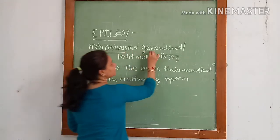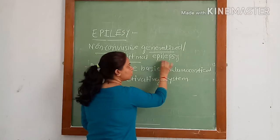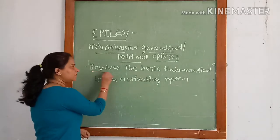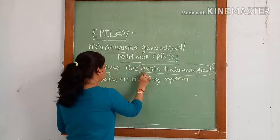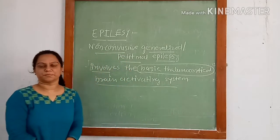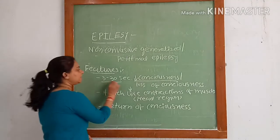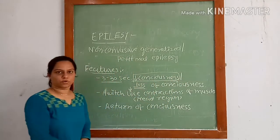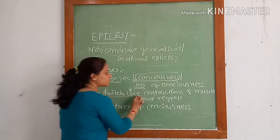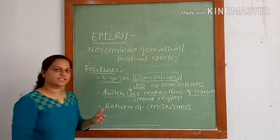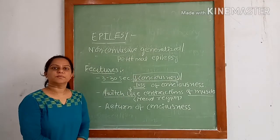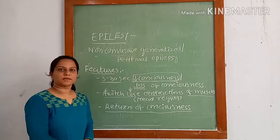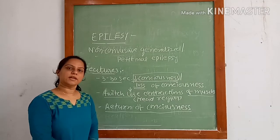Non-convulsive generalized seizures, also called petit mal epilepsy or absence seizures, involve the basic thalamocortical brain activity system. Features are 3–30 seconds of decreased or loss of consciousness and twitch-like contractions of muscles, especially of the head region, like blinking of eyes. This is followed by return of consciousness and resumption of normal activities.